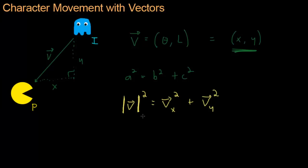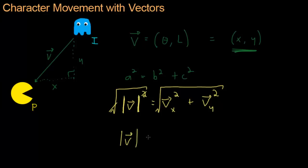Now all we have to do is solve for the length of the vector by taking the square root of both sides of the equation. The square and the square root cancel out, and we get that the length of the vector is the square root of X² + Y², where X and Y are the X and Y components of the vector. That's straightforward and will find us the distance between Enki and Pac-Man.